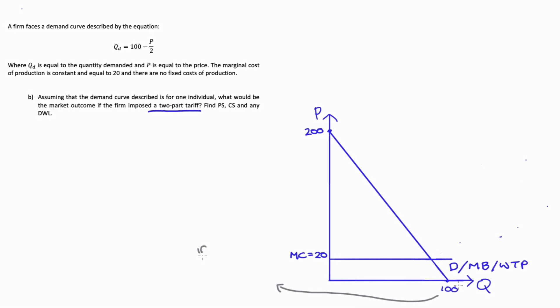To find our quantity axis intercept, I'm going to work with my demand curve and set price equal to zero. So I get QD is equal to 100 minus zero on two, which is just equal to 100. That's how I get my quantity axis intercept.